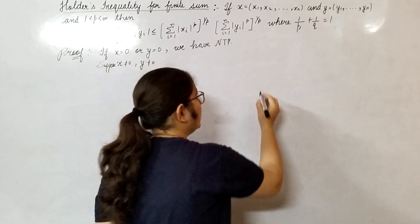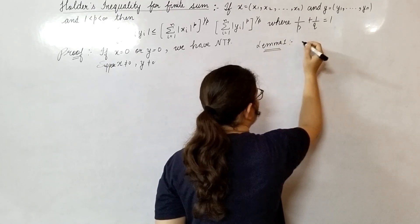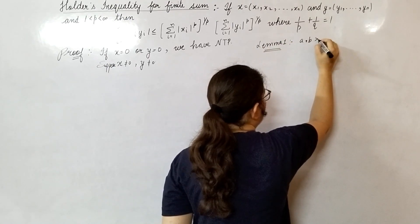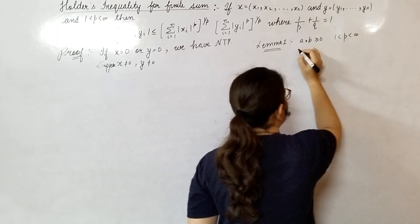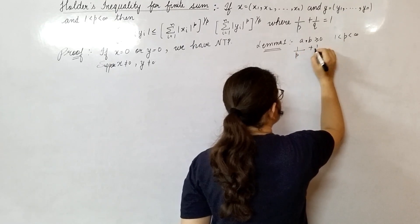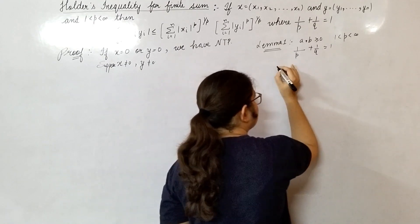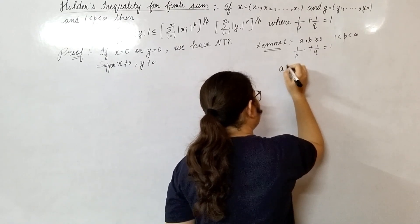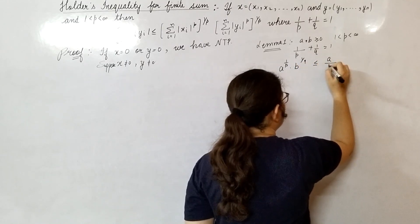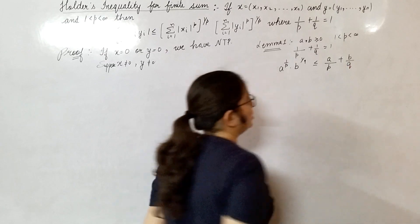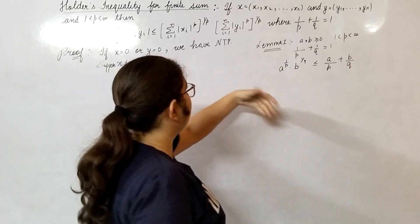What is the statement of Lemma 1? Lemma 1: a and b are non-negative, p lying between 1 and infinity, 1/p + 1/q = 1, and what we have is: a^(1/p) · b^(1/q) ≤ a/p + b/q. This is our Lemma 1. By the help of this inequality we will show Hölder's inequality.